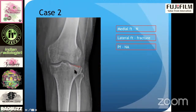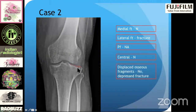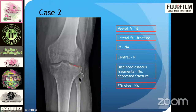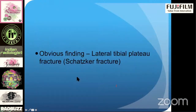You cannot see the patellofemoral compartment on the AP view, so that's not applicable. Centrally, normal. Displaced — no. But depressed — yes. So it is a depressed lateral tibial plateau fracture with an articular surface gap. You cannot comment on effusion on the AP view. This was a lateral tibial plateau fracture, which is also called a Schatzker fracture.